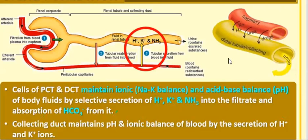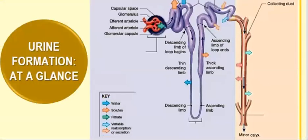In summary, plasma proteins remain in the blood while in the PCT, solutes and water come out. In the descending limb, only water exits; in the ascending limb, only solutes exit. In the DCT and collecting duct, some solutes and water are reabsorbed. Finally, the collecting duct drains into the minor calyx and then the major calyx.